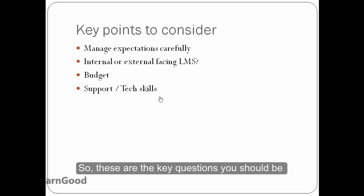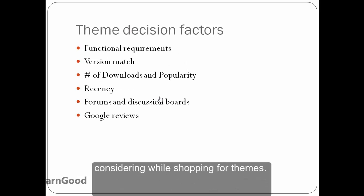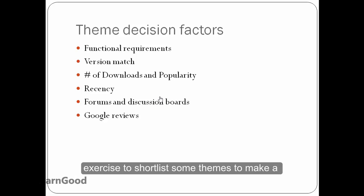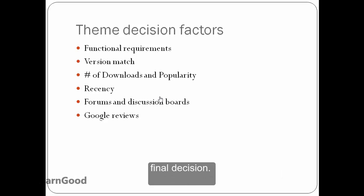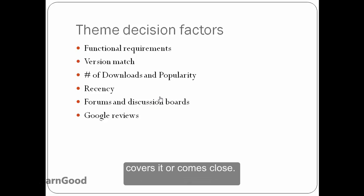These are the key questions you should be considering while shopping for themes. In this last slide, let's see how to go about actually selecting a theme. The objective of this exercise is to shortlist some themes to make a final decision. You should have first studied your functional requirements and then match if a theme covers it or at least comes close to your functional requirements.